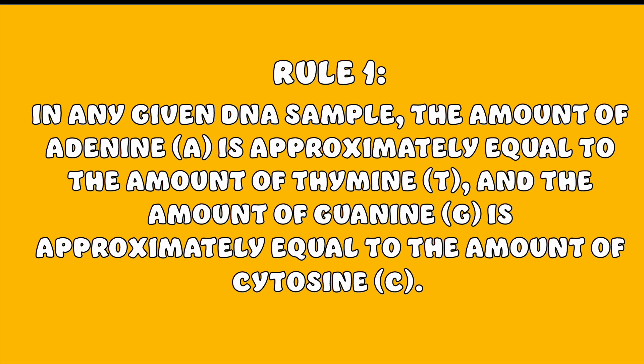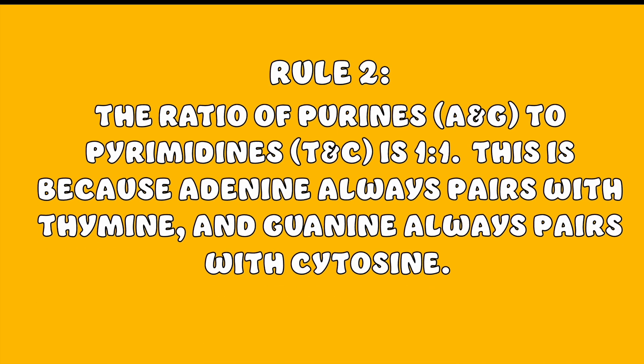Rule 2 is that the ratio of purines to pyrimidines is 1 to 1. This is because adenine always pairs with thymine, and guanine always pairs with cytosine, maintaining a consistent structure of the DNA double helix.